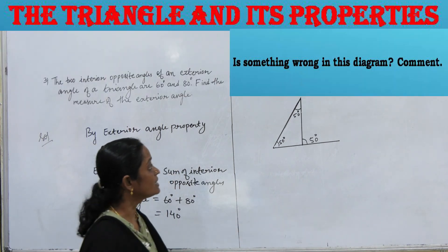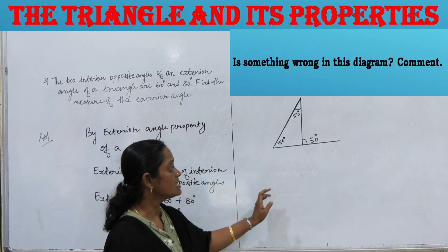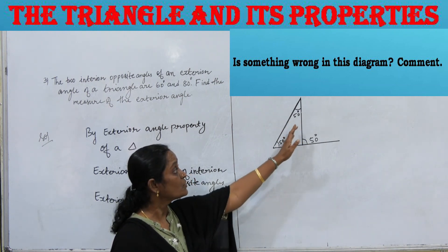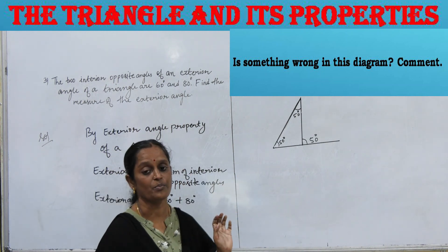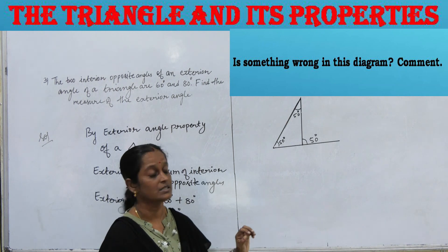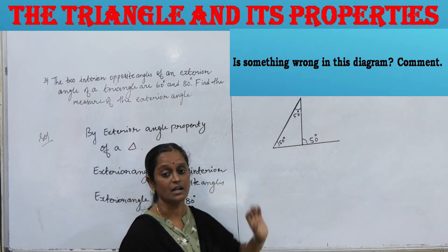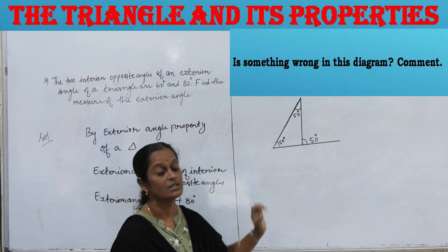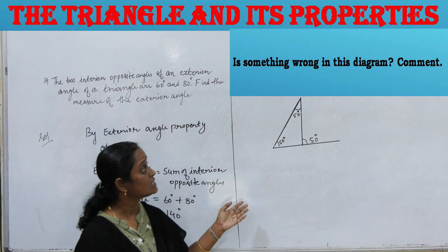Is something wrong in this diagram? Here the exterior angle is given as 50 degrees, and the two interior opposite angles are both 50 degrees, giving a sum of 100 degrees. By the exterior angle property, the exterior angle should equal the sum of the interior opposite angles, but 50 does not equal 100. So this diagram is incorrect.